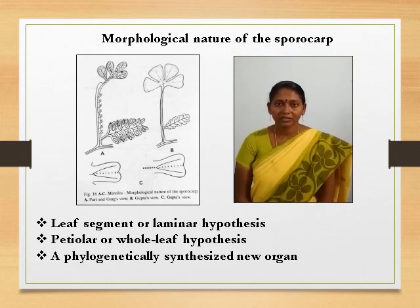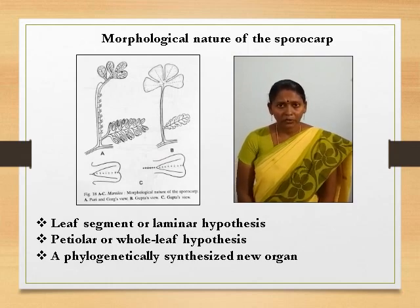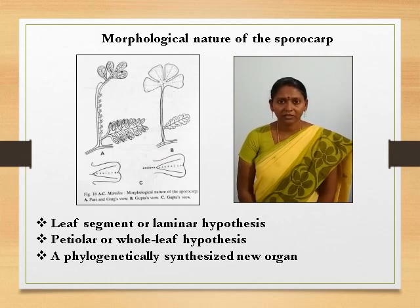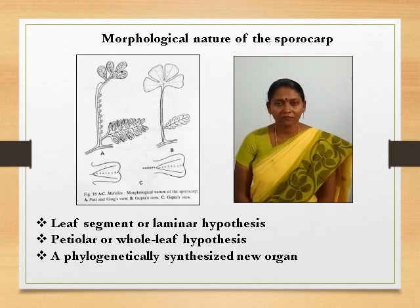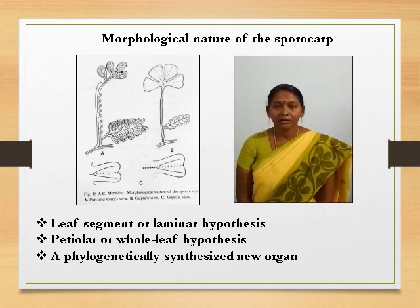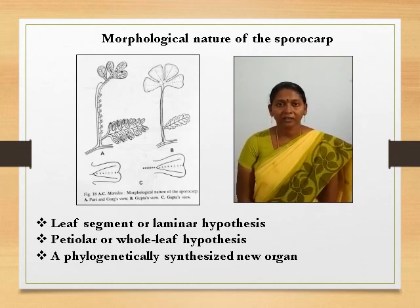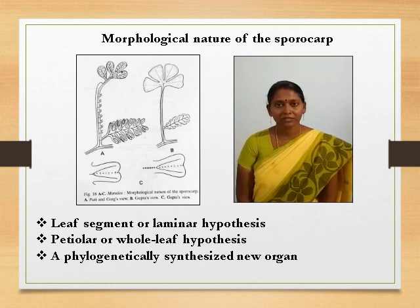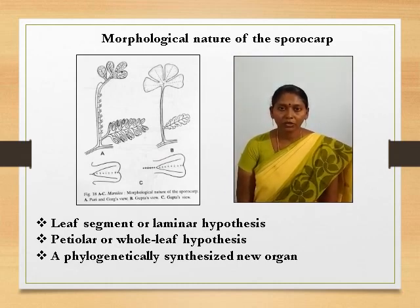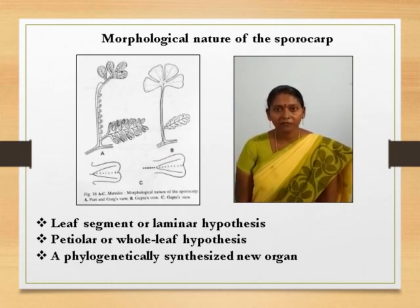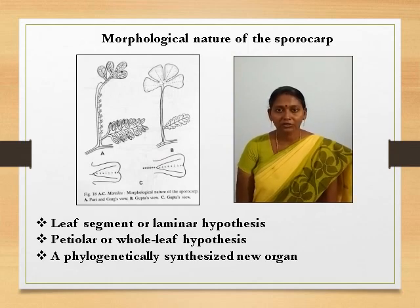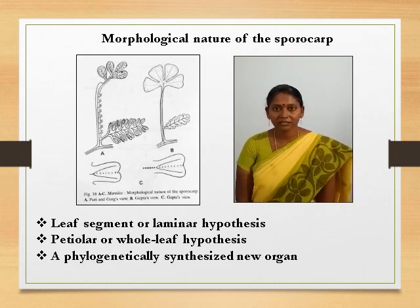The first hypothesis is the laminar or leaf segment hypothesis, according to which the sporocarp develops from a segment of the leaf called a leaflet. The vascular supply to the leaf and to the sporocarp were found to be similar, and based on that, Fury, Garth, and Gupta accepted that the leaf segment is similar to the sporocarp. The second is the petiolar or whole leaf hypothesis, proposed by Johnson, which states that the sporocarp is a modification of a whole leaf, not just a leaf segment. The third is the phylogenetically synthesized new organ hypothesis, proposed by Bayaquist, based on the differences in ontogeny (development) — since the development of the sporocarp and the leaf are extremely different, he proposed that the sporocarp is a phylogenetically synthesized new organ.